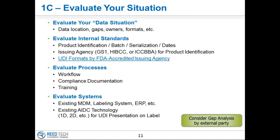After you figure out the requirements for your inventory, next would be to evaluate where you are — this is commonly referred to as a gap analysis. Look at where your data is residing. Are you currently identifying it in one of the FDA-approved agencies, like GS1, HIBCC, or an ICCBBA standard? If not, you need to contact one of those three, set up an account, and start understanding their protocol for numbering.